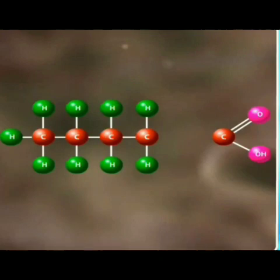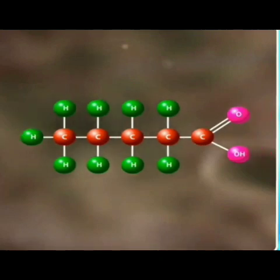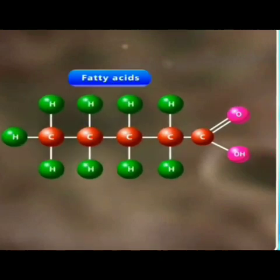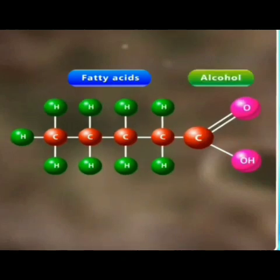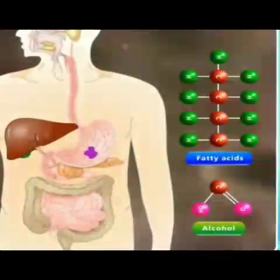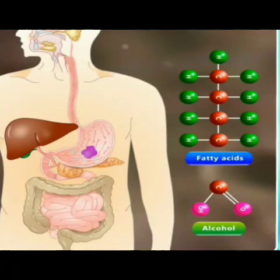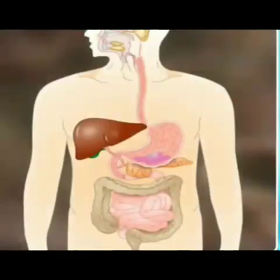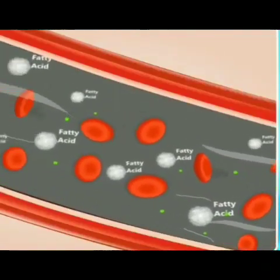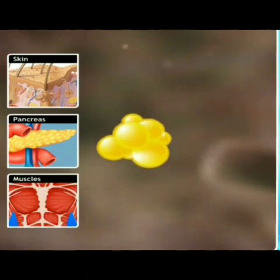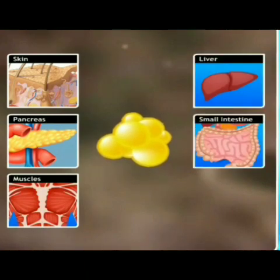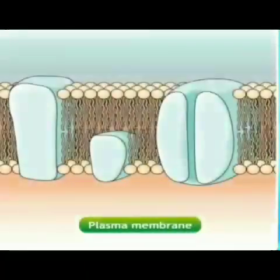What are lipids? Lipids are substances formed by specific chemical bonds between fatty acids and alcohol. After digestion, lipids are converted into fatty acids and alcohol. These fatty acids then go to different cells, which produce various substances necessary for themselves.